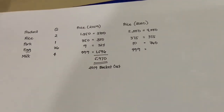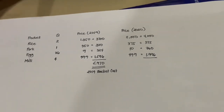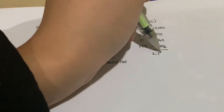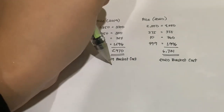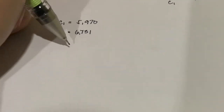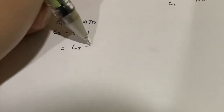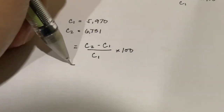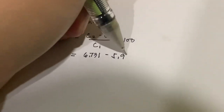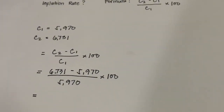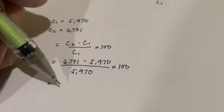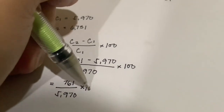We must remember that the quantity in the CPI is fixed. After getting the market basket cost of both the base year and the current year, we're now substituting our numbers into the formula: C2, which is the current year, less C1, which is our base year, over C1, and then we must multiply it by 100 to get the inflation rate.